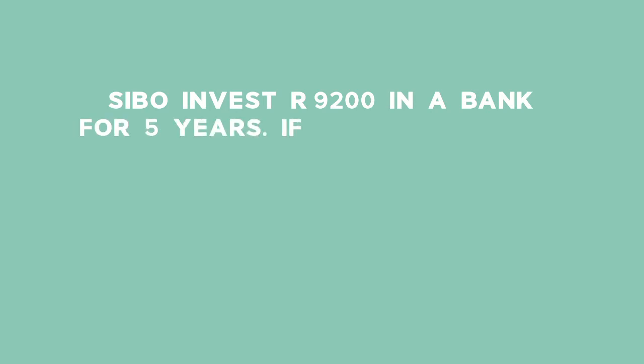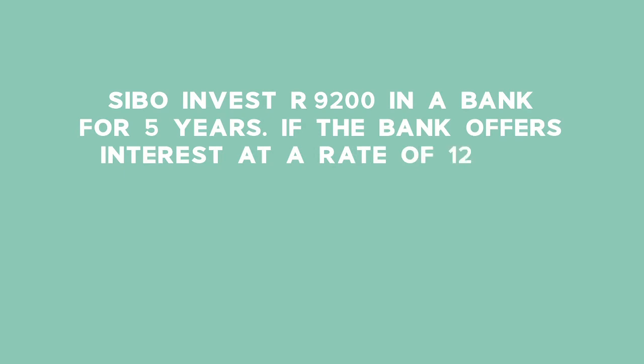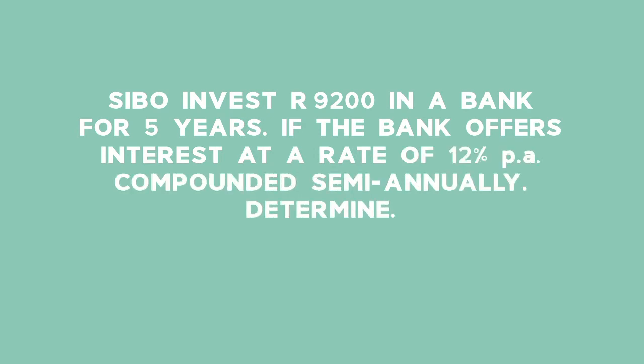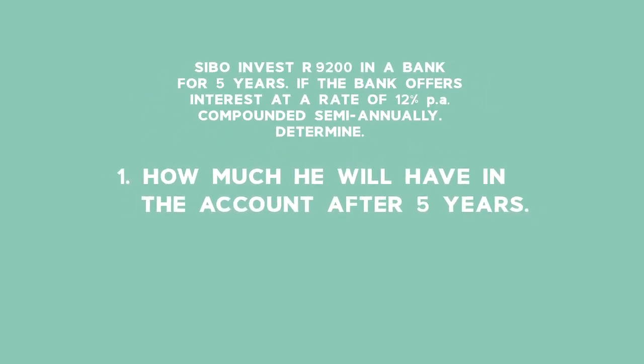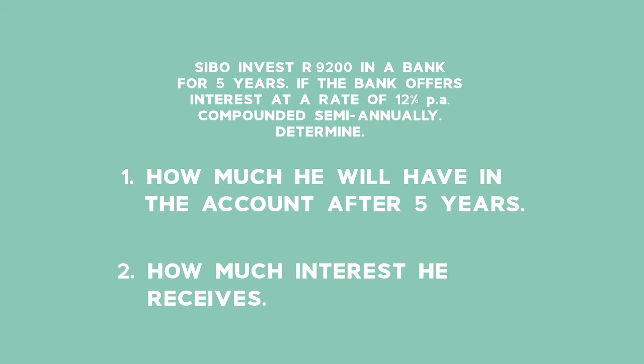Let's look at an example. Sibor invests R9,200 in a bank for five years. If the bank offers interest at a rate of 12% per annum, compounded semi-annually, determine one, how much he will have in the account after five years, and two, how much interest he receives.